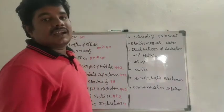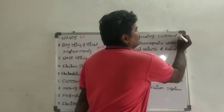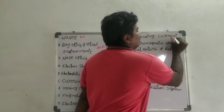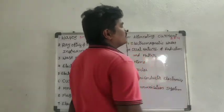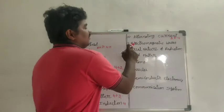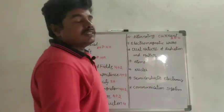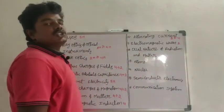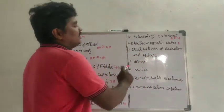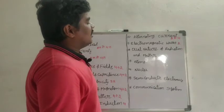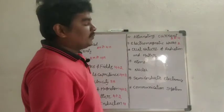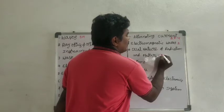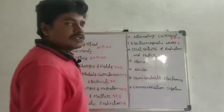Tenth one, alternating current—from this chapter we get 2 marks or 4 marks questions. Eleventh one, electromagnetic waves—we get only 2 marks questions. Twelfth one, dual nature of radiation and matter—from this chapter we get 2 marks or 4 marks questions.